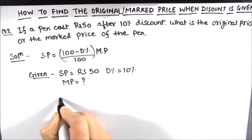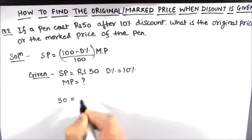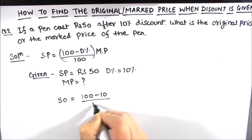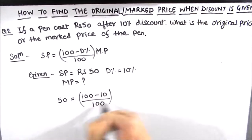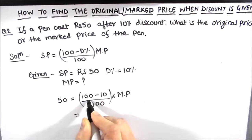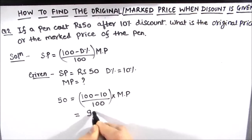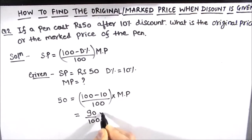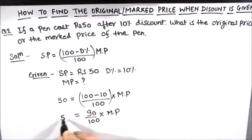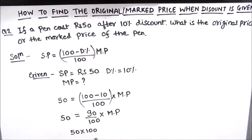Putting the values in the formula: 50 is equal to (100 minus 10) divided by 100, times marked price. This gives us 90 divided by 100, times marked price, equal to 50. Cross multiplying: 50 times 100 is equal to 90 times marked price.